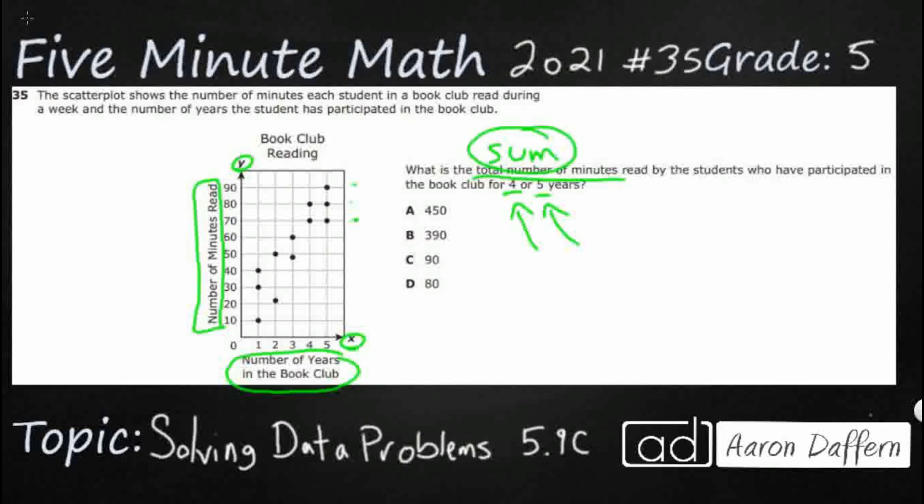So as we can see, we've got this kid that read for 1 year, he's read for 10 minutes. We've got a 30, we've got a 40, and we just go all the way up. But really, let's take a look at what we're looking at here.